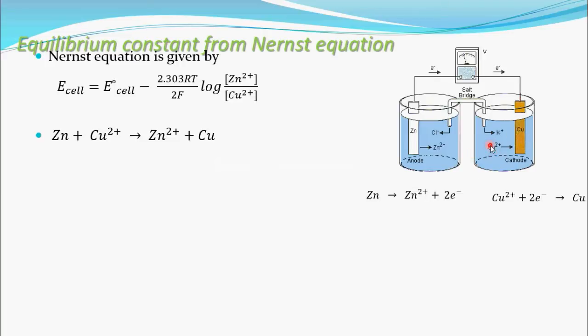So concentration of Cu²⁺ ions goes on decreasing. What? Concentration of zinc ions goes on increasing and concentration of copper ions goes on decreasing. At the same way this voltage also goes on decreasing. This voltage also goes on decreasing.